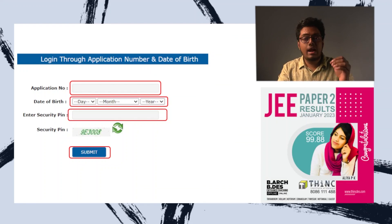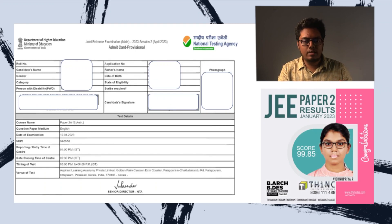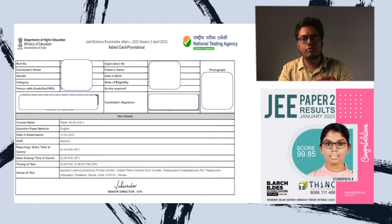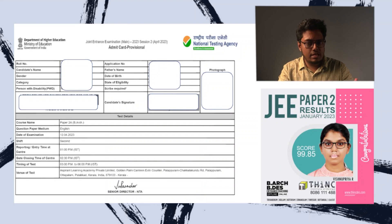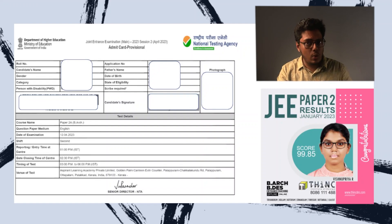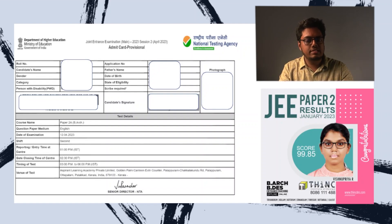Now I will take you through the admit card format and the instructions given in it. The admit card will be a three-page document. On the first page, you will get all these details — the photograph you submitted, your application form, candidate details, candidate name, category, and all those things. Below it, you can see the exam center details, including the reporting time, which is given here as 1 p.m., and the venue of the test — that is the exam center address.